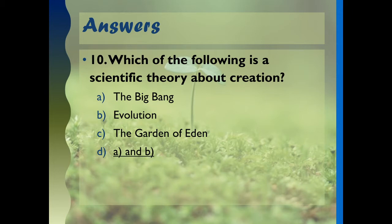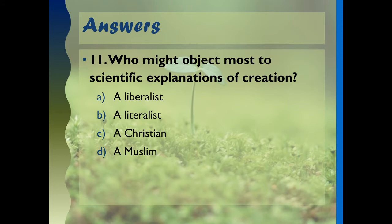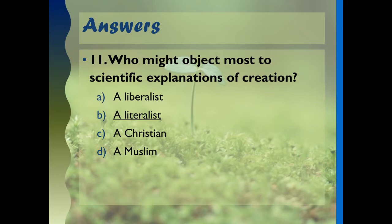Number ten: which of the following is a scientific theory about creation? A and B - the Big Bang theory and evolution. Remember they are theories, not proved, although we could probably prove evolution - the Big Bang's a bit trickier. But even most religious believers would believe in the Big Bang; the difference is a religious believer might believe God was the first cause. Who might most object to scientific explanations of creation? That's a literalist. Which of these statements is most correct? D - it's possible to believe in science and religion at the same time; many scientists are still religious.